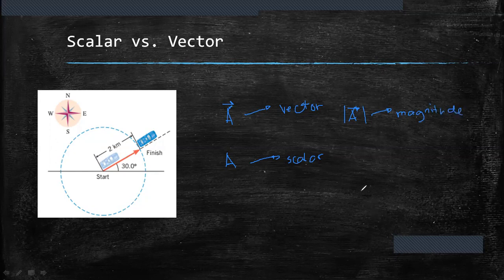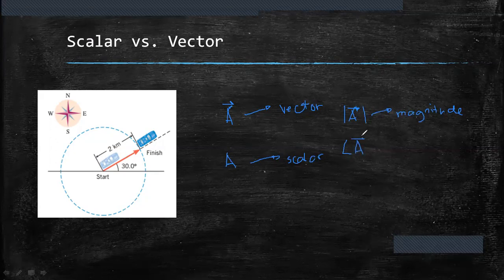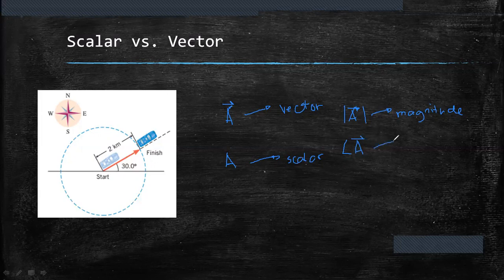Another thing, if you see an angle sign and the vector value, it gives us or it gives reference to the direction, or the angle of direction of the vector quantity. So take note of those symbols that we will use all throughout the course.